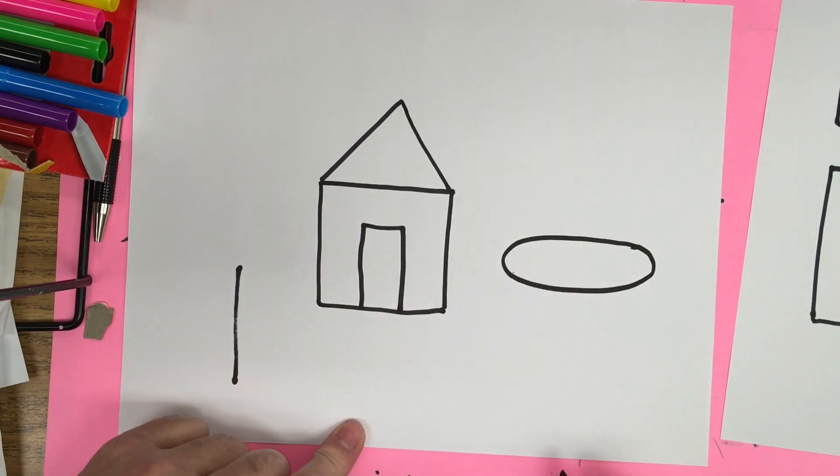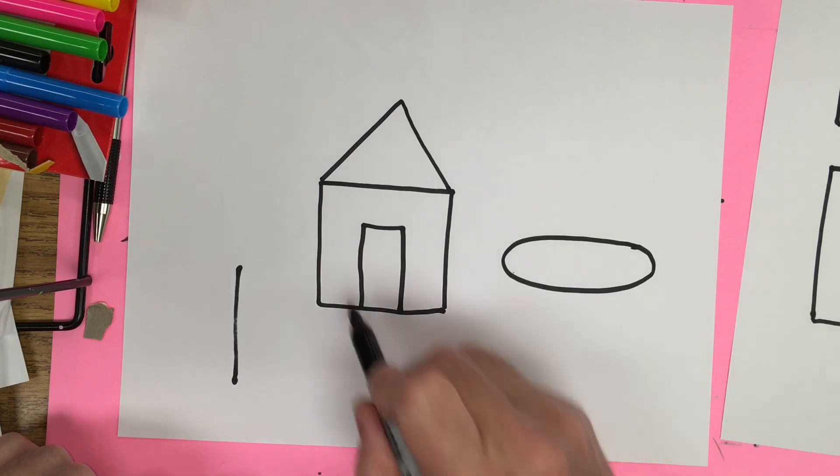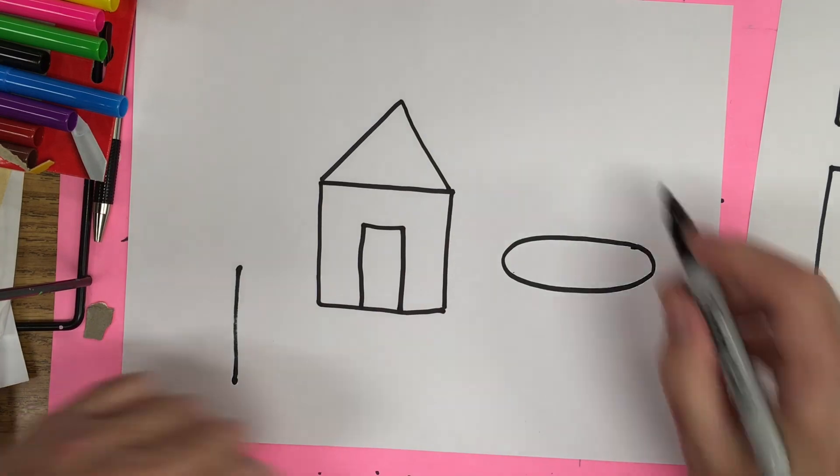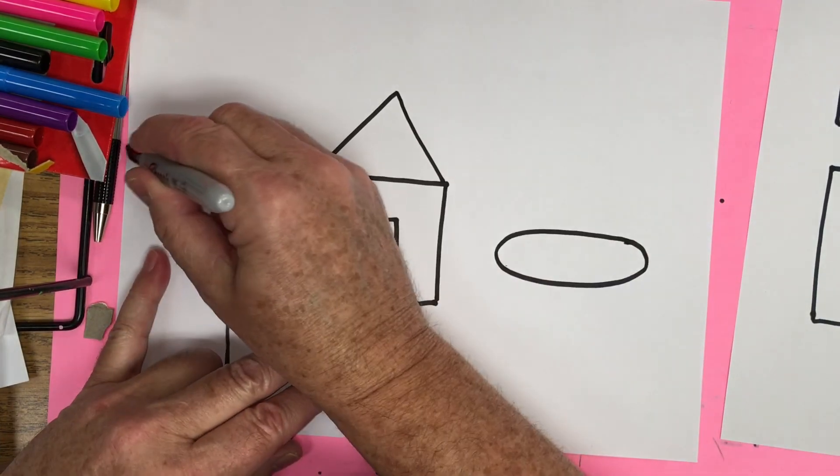And maybe I want to put an oval over here. This could be the swimming pool or the pond.